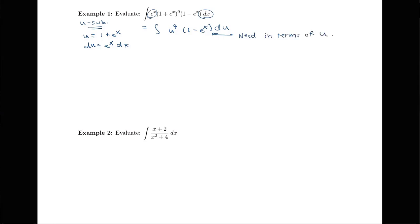In this section, we're taking techniques we've already learned but applying more involved versions of them. In addition to the substitution u equals 1 plus e to the x, it's also useful to do an additional substitution to figure out what e to the x is in terms of u. Notice that if u equals 1 plus e to the x, then e to the x equals u minus 1.